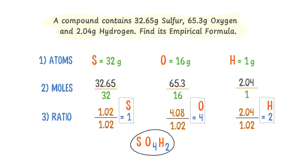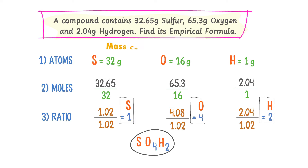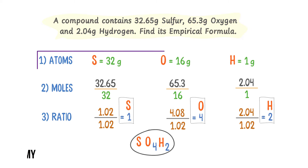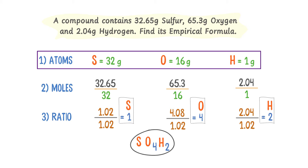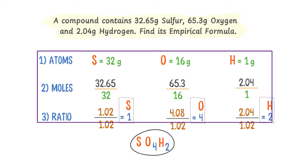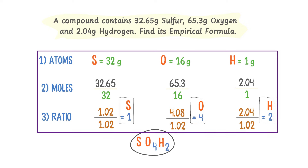Also note that in this type of numerical, mass composition of elements is given — like 32.65 grams of sulfur, 65.3 grams of oxygen, and 2.04 grams of hydrogen. We calculate the empirical formula by first highlighting the atoms and their relative atomic masses, secondly finding the number of moles of the given elements, and thirdly calculating the simplest whole number ratio. By these three steps, we can easily find the empirical formula of any compound.